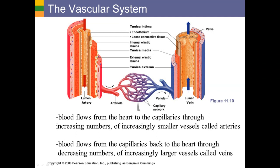The capillaries are drained by first lots of very small veins called venules, which then merge into bigger veins, which merge into bigger veins, eventually leading back to the heart either via the inferior vena cava or the superior vena cava. Blood flows from the capillaries back to the heart through decreasing numbers of increasingly larger blood vessels, which we call veins.